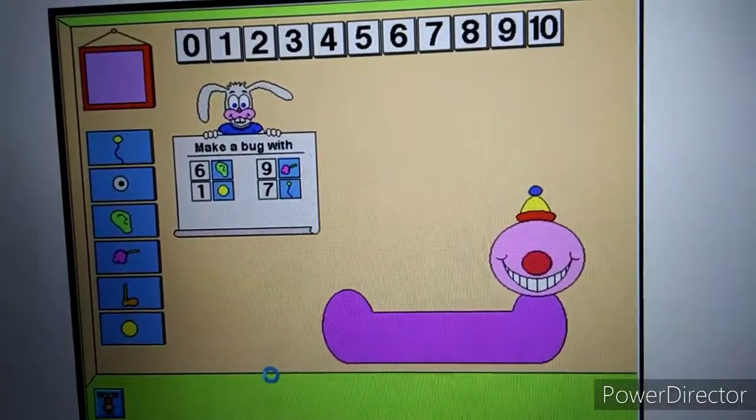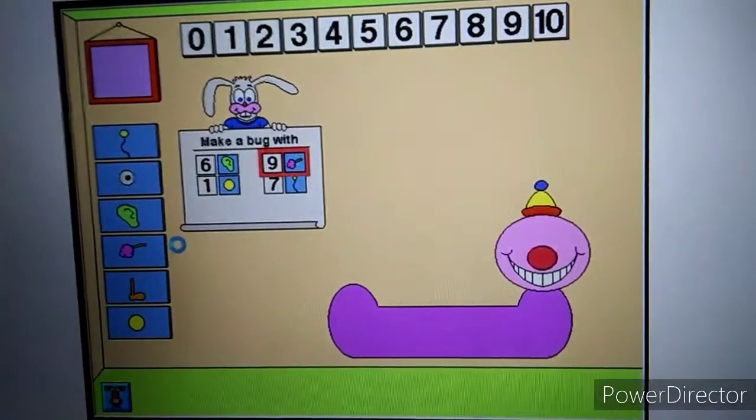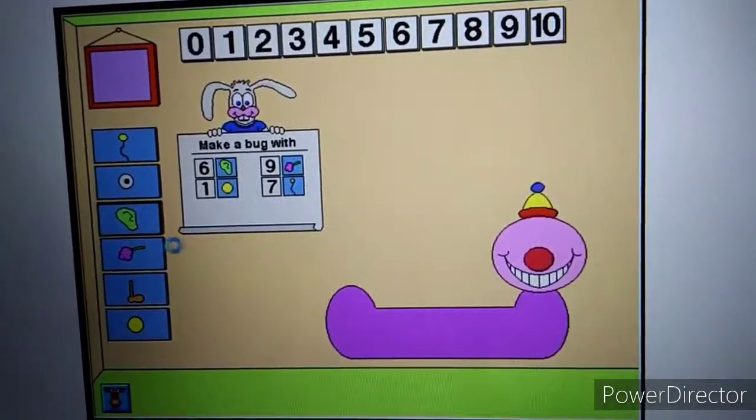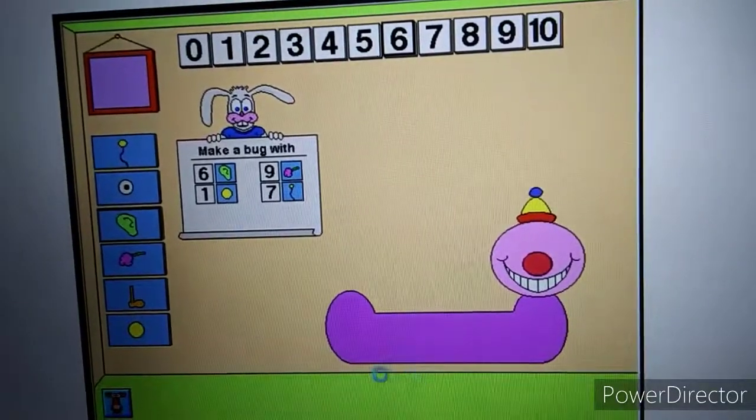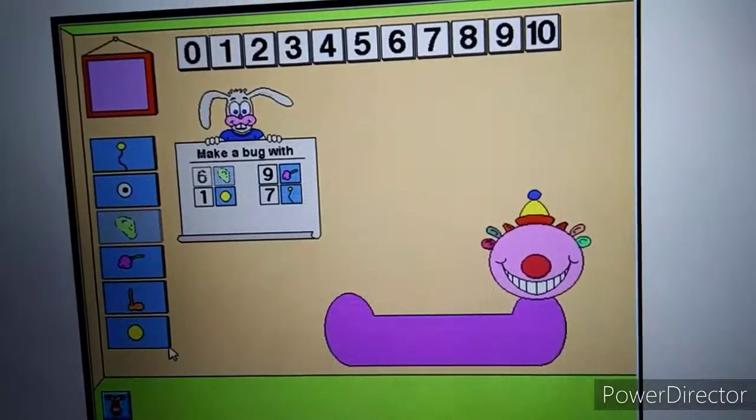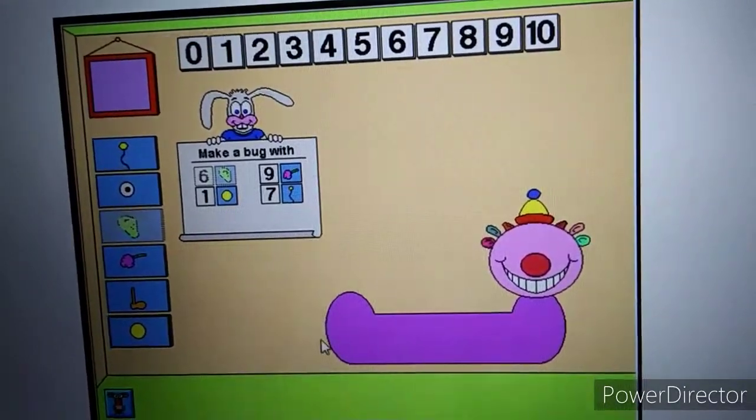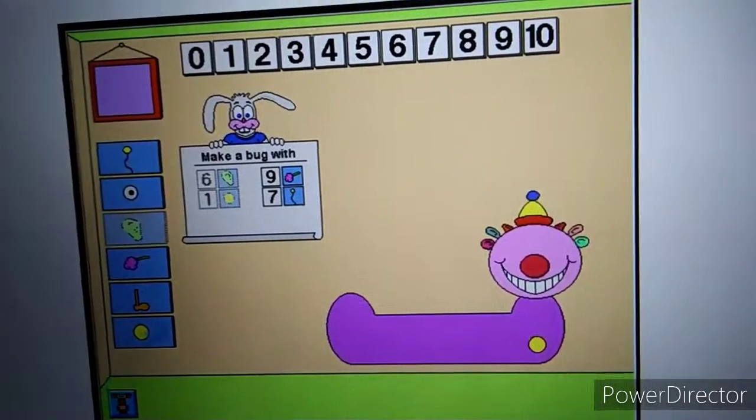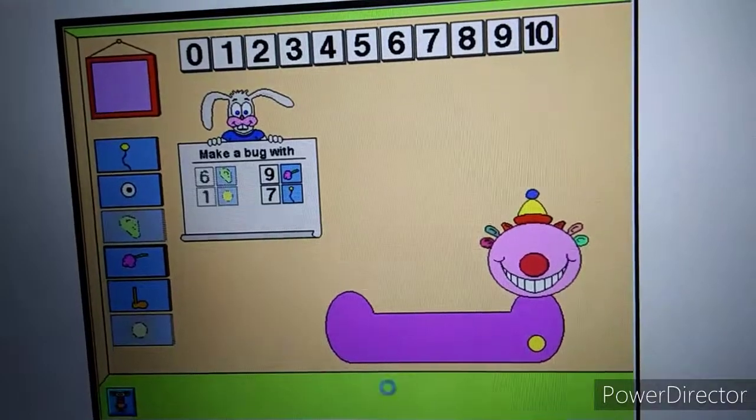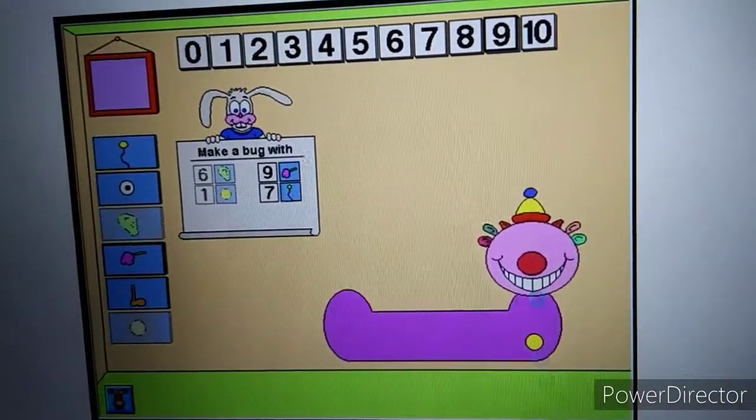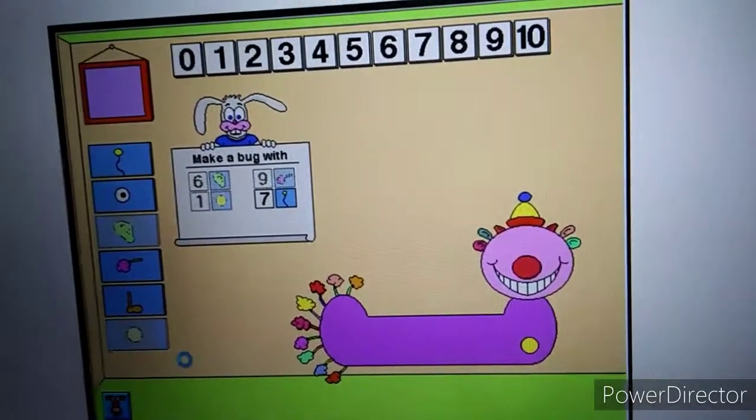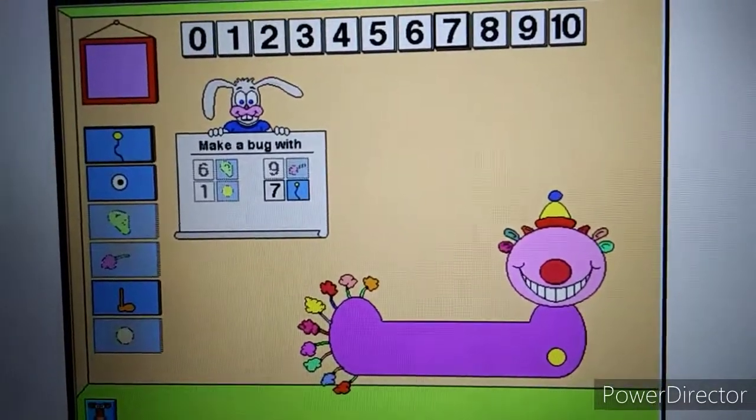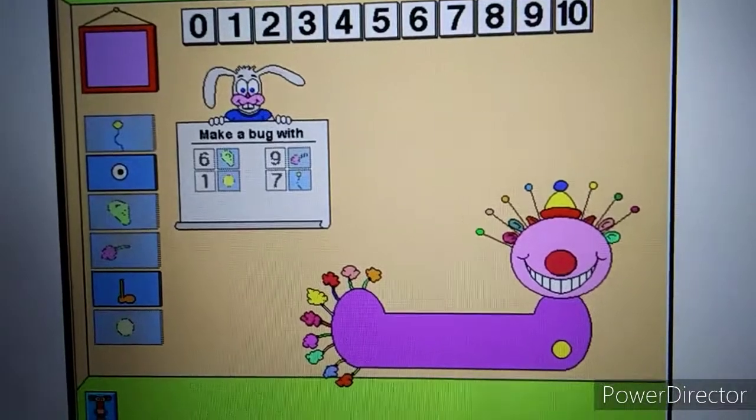Make a bug with six ears, nine tails, one spot, and seven antennae. Ears. Six ears. Spots. One spot. Tails. Nine tails. Antennae. Seven antennae. Awesome.